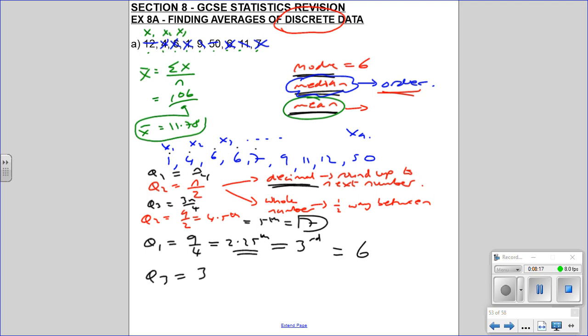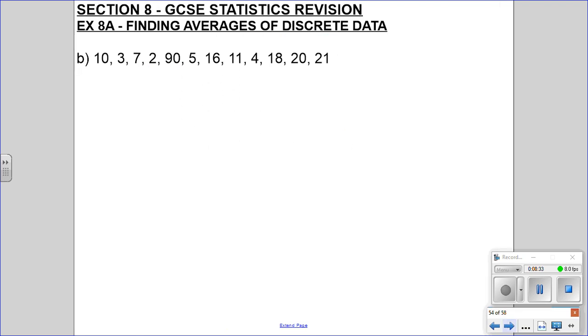And Q3, so 3 lots of 9 over 4, is 27 over 4, so that's 6.75th. Again, it's a decimal, so we round up to the seventh. And the seventh bit of data, 1, 2, 3, 4, 5, 6, 7, is 11. Let's do another example of that.